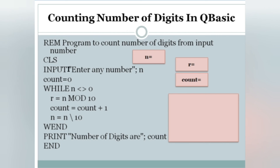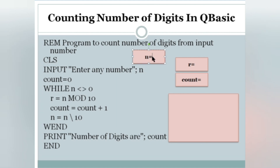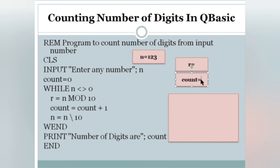CLS is used to clear the output screen. We use INPUT to get the number from the user — 'Enter any number' — and it will be stored in N. Let's say the user enters 123. After that, we keep count equals to zero, and then the while loop starts.